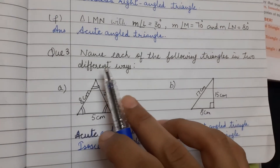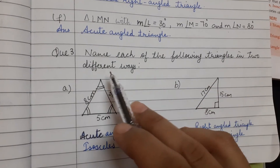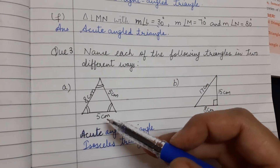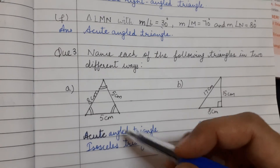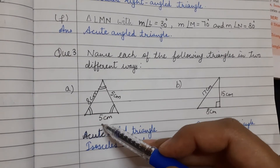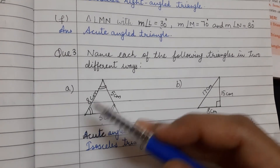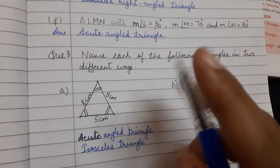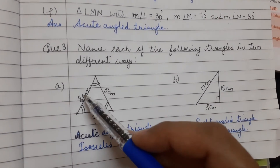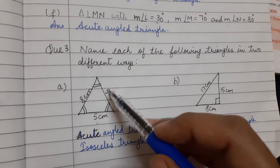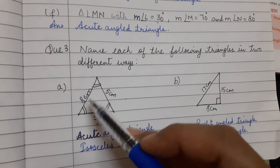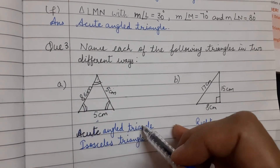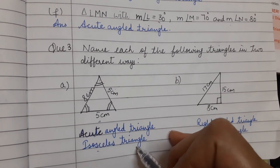Question 3: Name each of the following triangles in two different ways. You have to look at both the angles and the sides. So for the first triangle, two sides are equal — isosceles — and all the angles are acute — acute angled triangle. So this is an acute angled isosceles triangle.